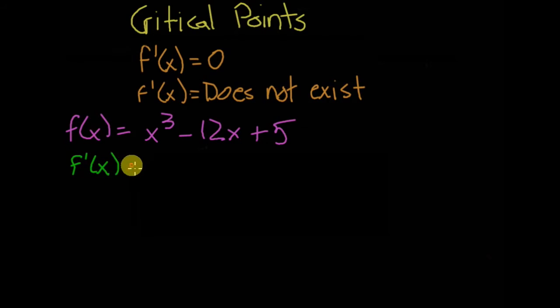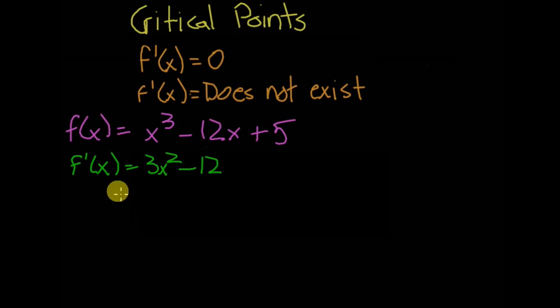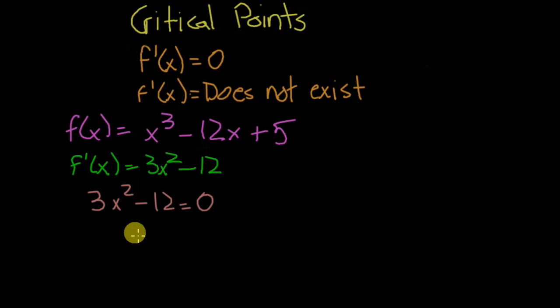You have to find the derivative. So f'(x) is equal to 3x squared minus 12. Now, because the domain is all real numbers, f'(x) always exists, so you need to set f'(x) equal to zero.